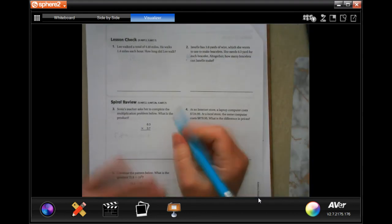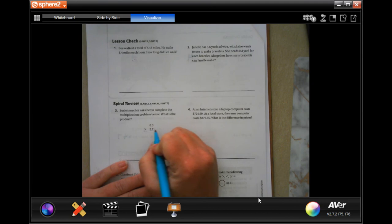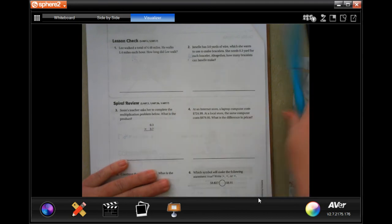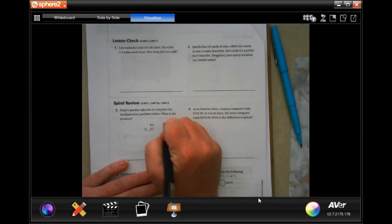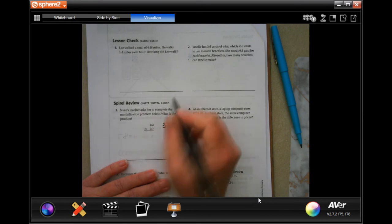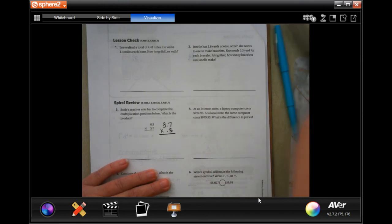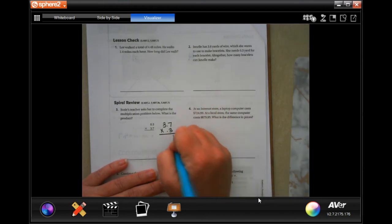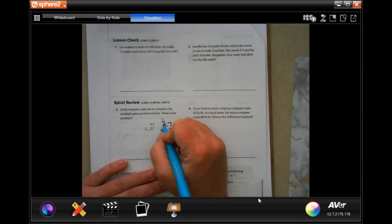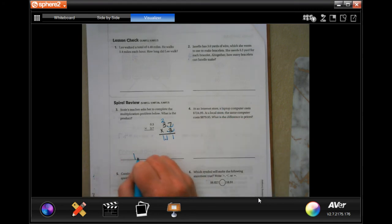So I would actually, instead of doing it this way, I would put the 3.7 on top because I don't want to multiply everything by zero. So I'm going to take that zero out. Now I'm just going to go 3 times 7 is 21. Carry the 2. 3 times 3 is 9. Plus 2 is 11. And I'm going to go in 1, 2 places for the decimal. So 1.11.